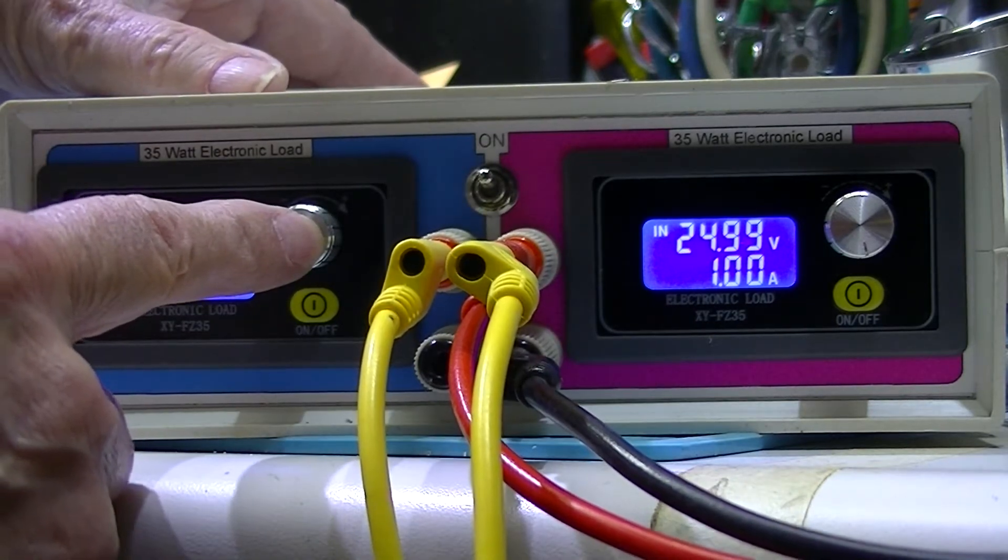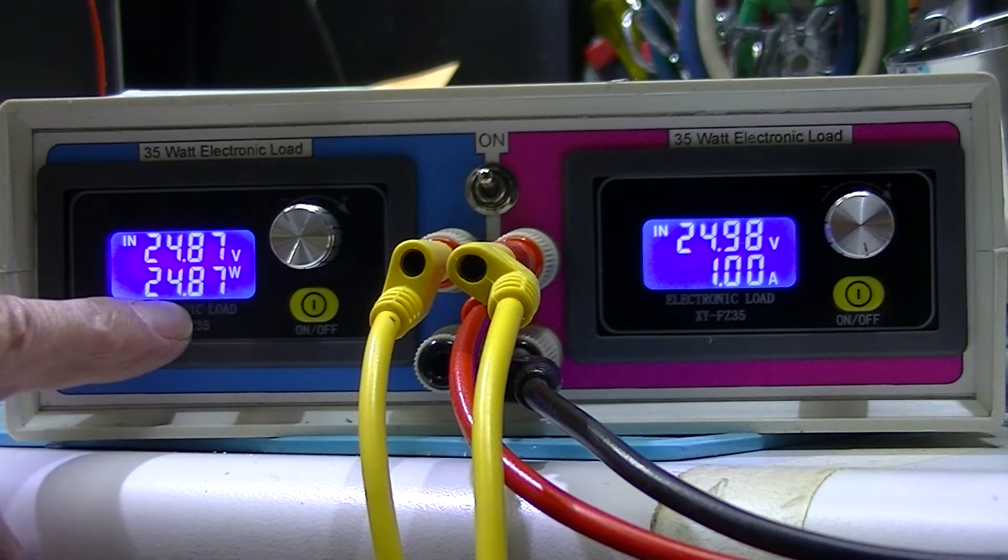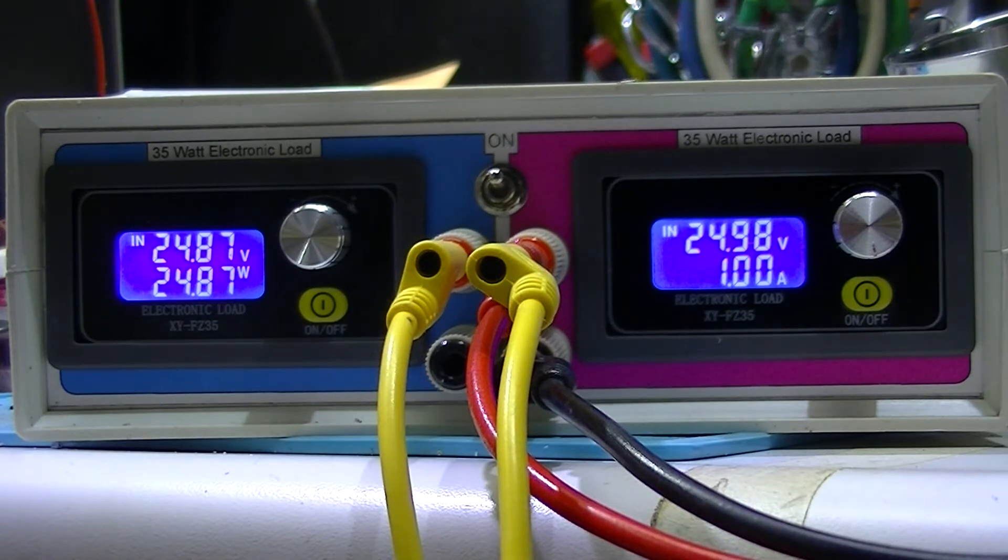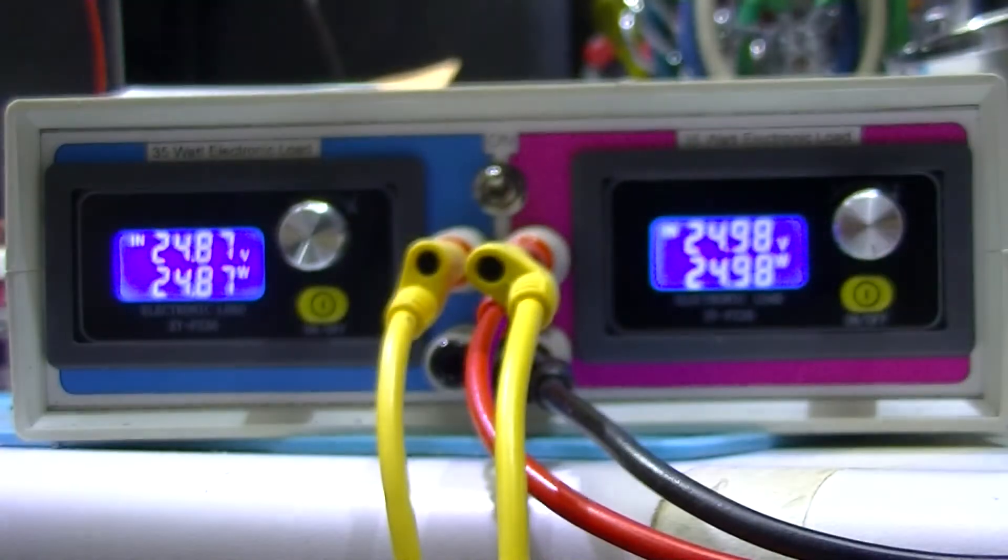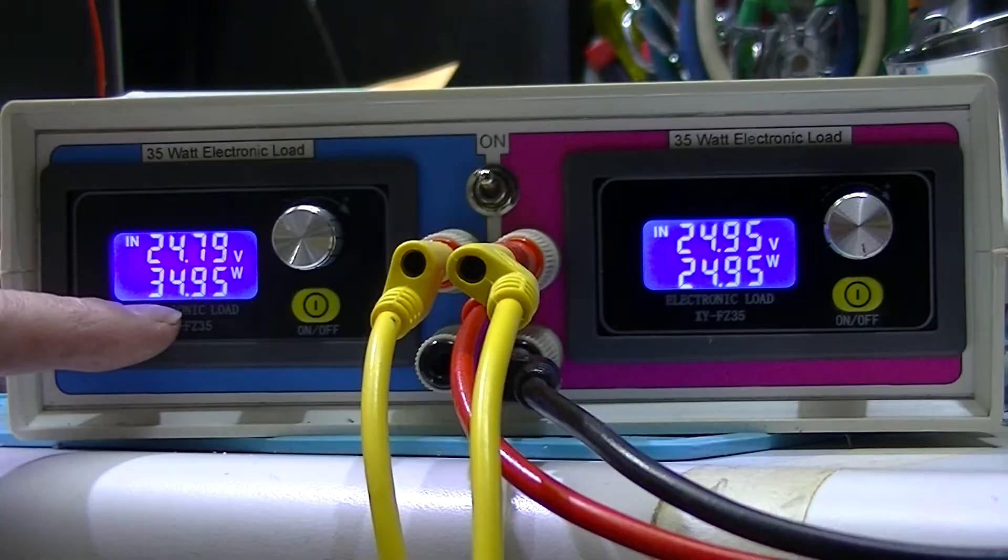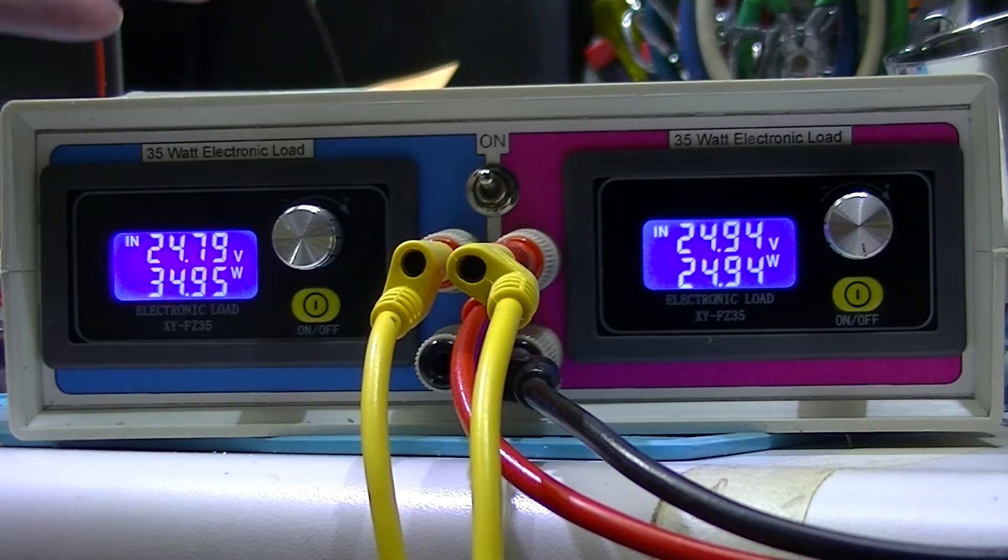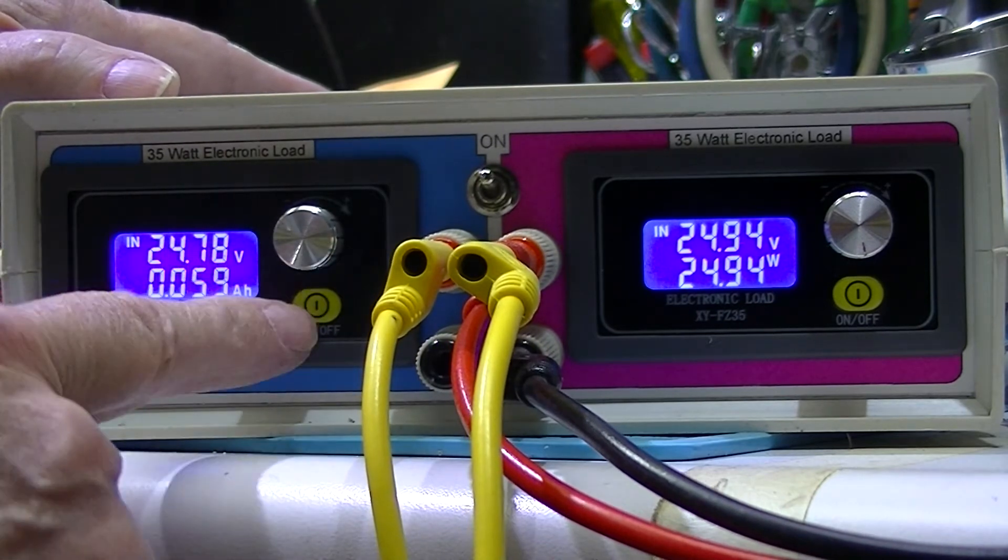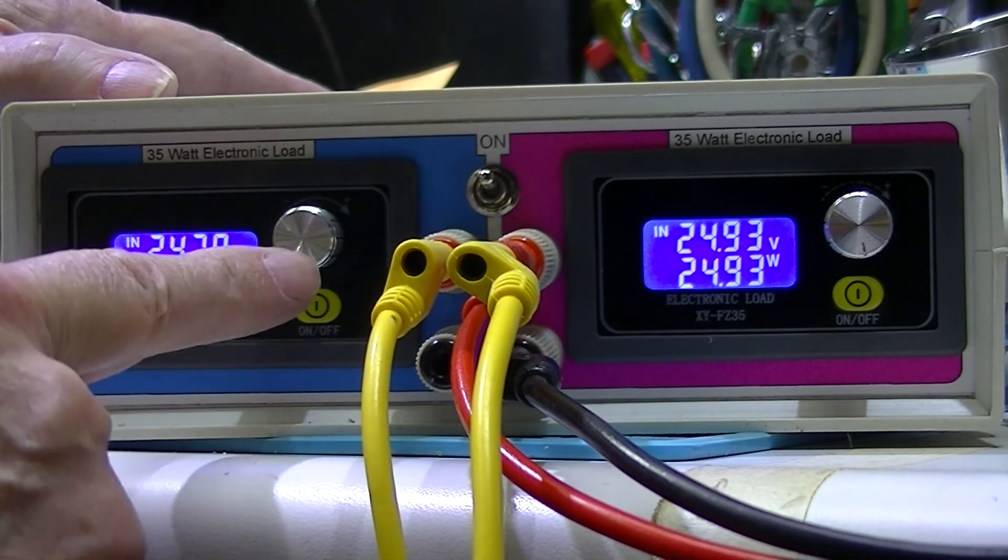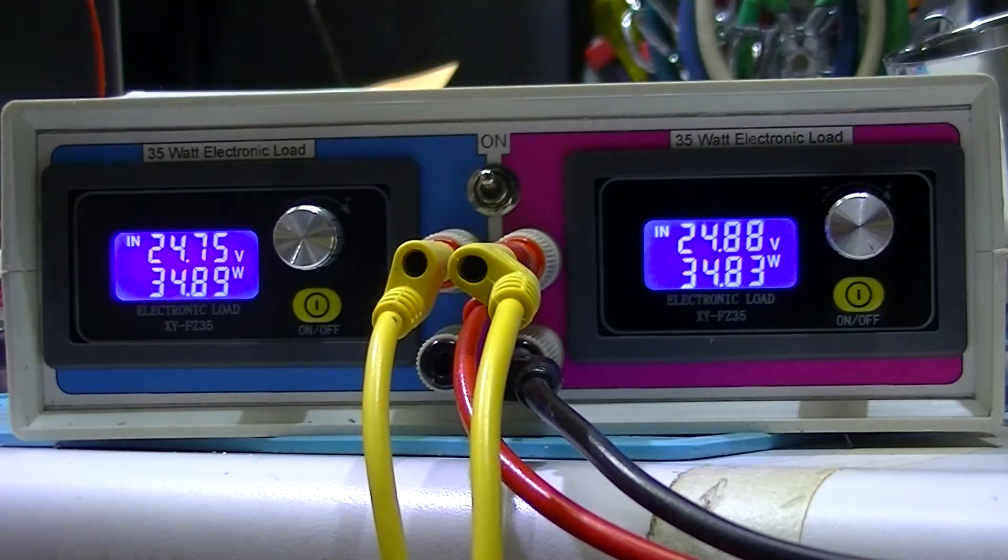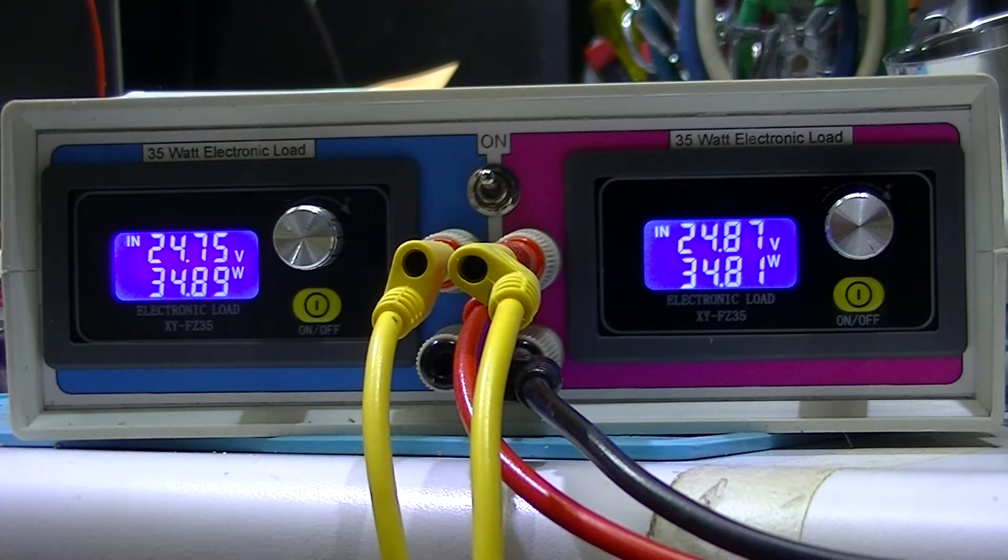If I push this button once, it displays watts. I'll run it up to 35 watts. It looks like 35, 34, almost 35 watts equates to 1.4 amps. I'll turn this one up to 1.4 amps.